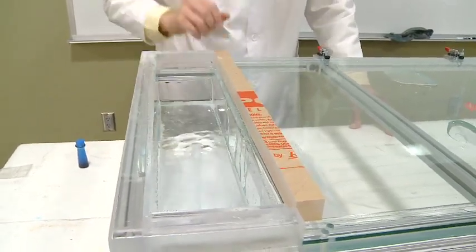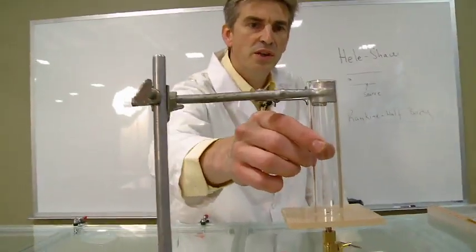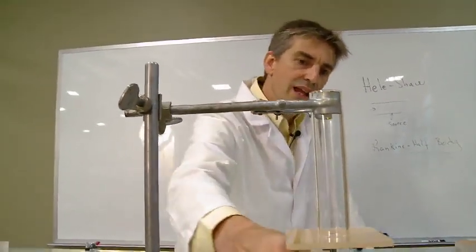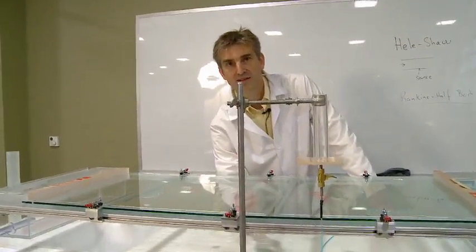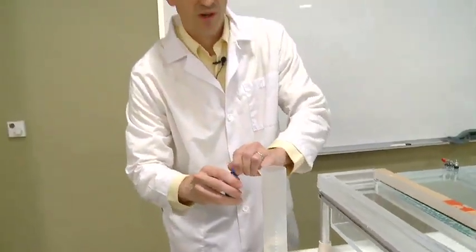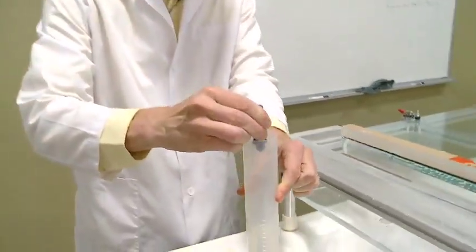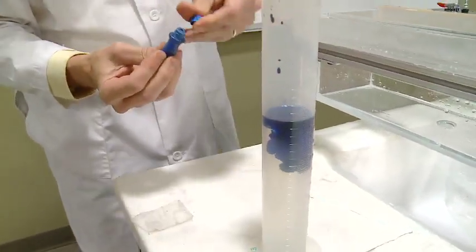In order to generate the source, I'm going to use this graduated cylinder with a little bit of water and food color. And I'm going to inject via this little tube into the lower plate. In order to visualize the flow, I'm just going to use some basic food coloring here with some water. And I'll put the drops in there. And this will be what we use to visualize the source.